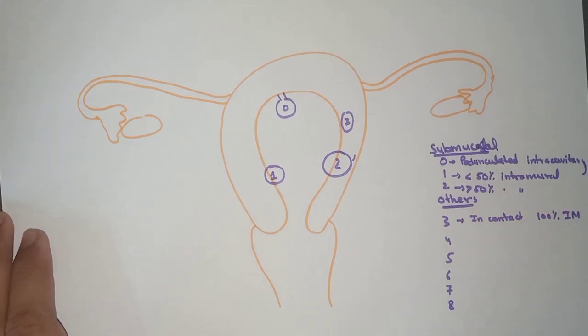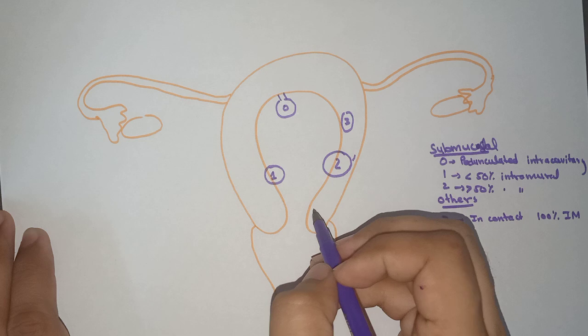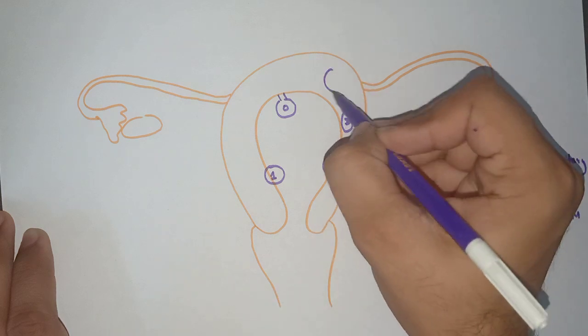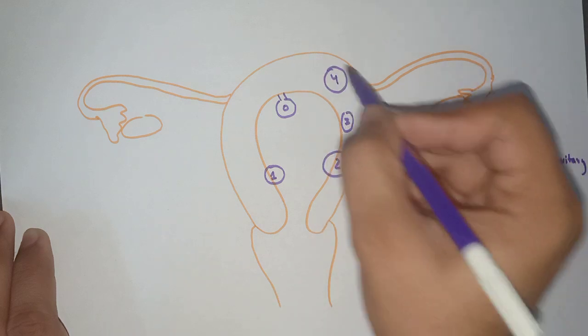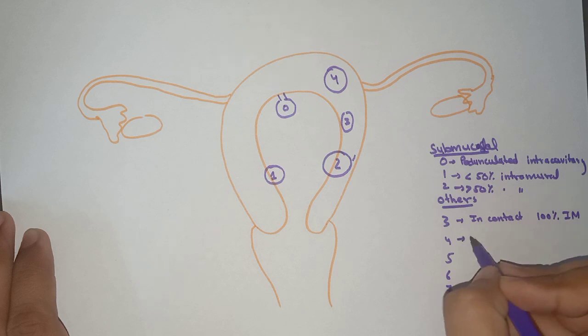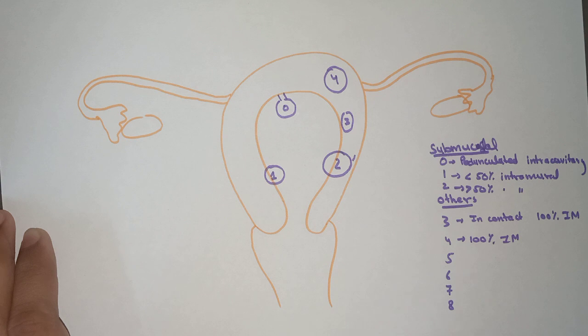Now coming to Type 4, which is purely intramural and not touching any boundary. It is 100% intramural.